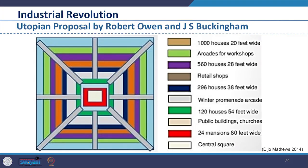Robert Owen and J.S. Buckingham tried to design a utopian town which had 1000 houses, a 20-feet-wide arcade for workshops, 560 houses with 28-feet-wide retail shops, 296 houses, a 38-feet-wide winter promenade arcade with 120 houses, 54-feet public buildings and churches, 24 mansions, and an 80-feet central square. In 1849, he published a treaty mentioning his plan for a model town with 10,000 inhabitants.